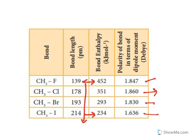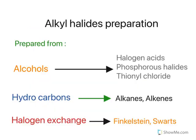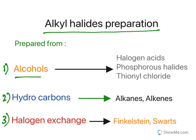Now let us get into the preparation of alkyl halides. Alkyl halides can be prepared from alcohols, hydrocarbons, or by halogen exchange. From alcohols, you can use halogen acids, phosphorus halides, or thionyl chloride. From hydrocarbons, they can be synthesized from alkanes and alkenes. For halogen exchange, there are two named reactions: Finkelstein reaction and Swartz reaction.